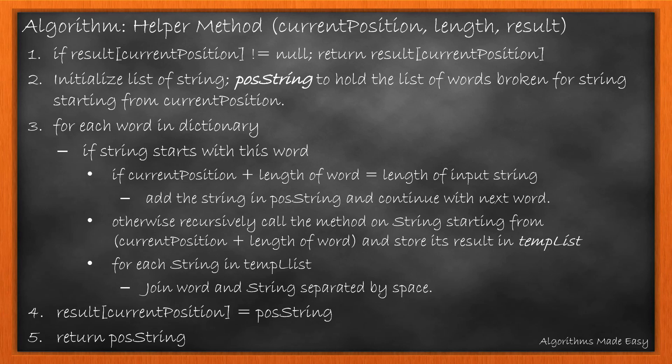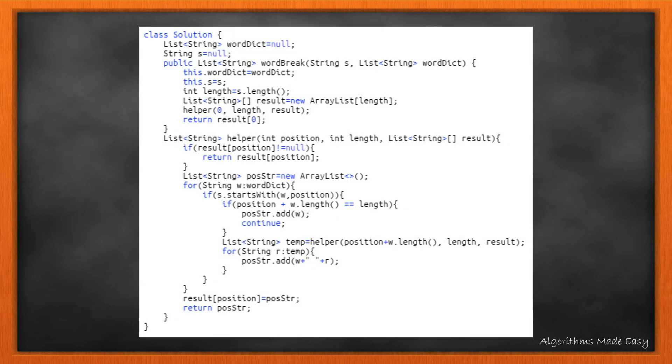At the end, we add the pos string in result for current position and return the pos string. Here's the actual code snippet for the method. You can also find a link to this code in the description below.